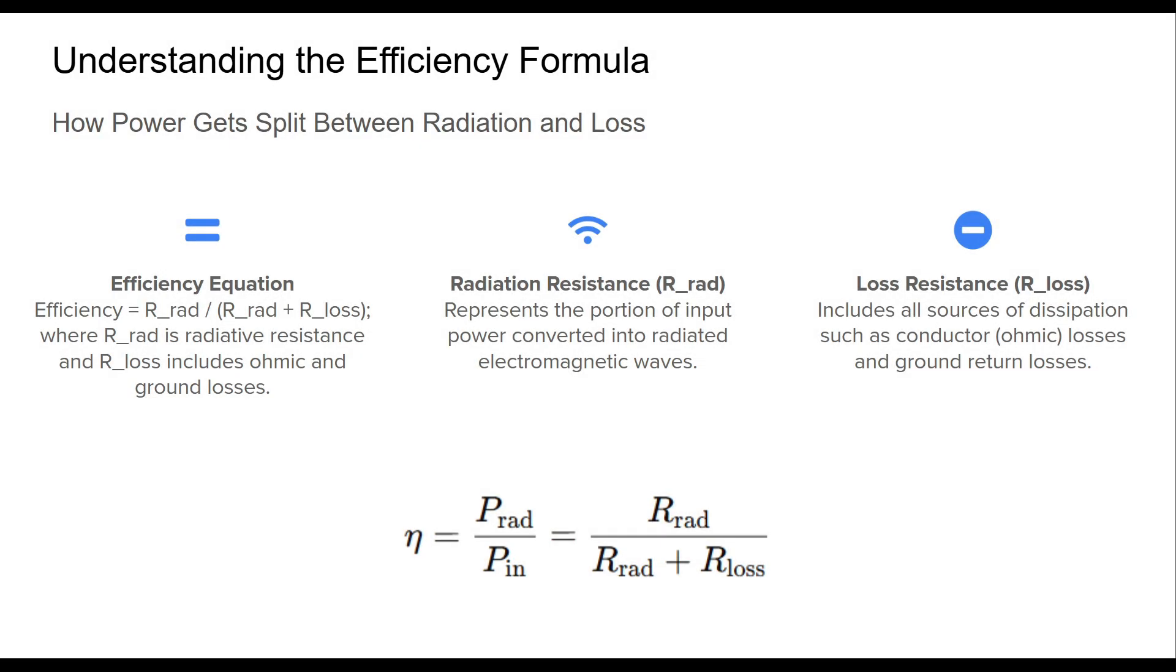This formula is the cornerstone of evaluating antenna efficiency. The resistance that radiates energy, R_rad, for radiation, competes with resistance that dissipates energy, R_loss, such as the loss through heat or soil conductivity. These two define how much of your transmitter power truly gets sent out as a signal. For instance, in an ideal case where R_loss is zero, efficiency would be 100%. But in real-world antennas, there's always some loss.